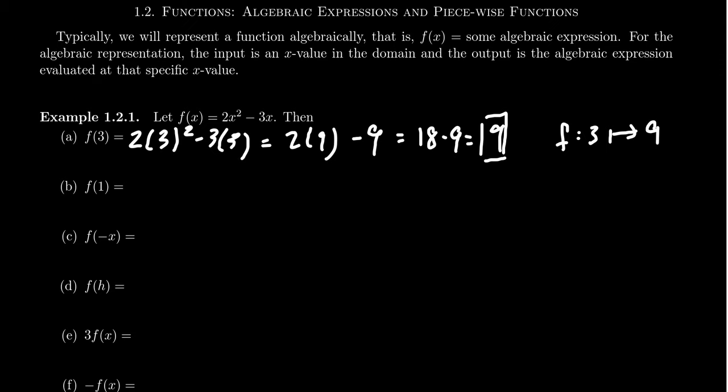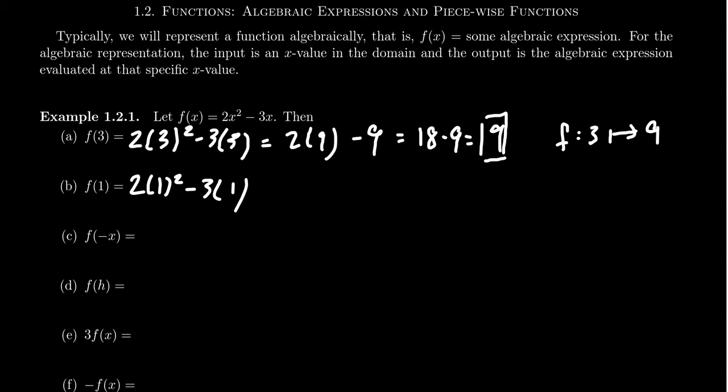If we were to do f(1), it's the same basic idea. We'll take 2 times 1 squared minus 3 times 1. 1 squared is 1, times that by 2 is 2, 3 times 1 is 3. You get 2 minus 3, which is negative 1. And that's then the evaluation of the function. That's all there is really to it.